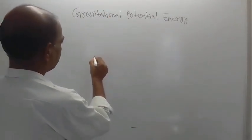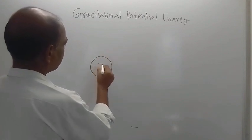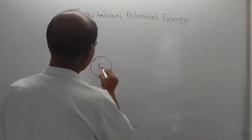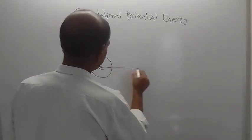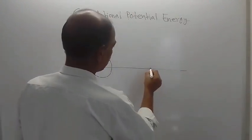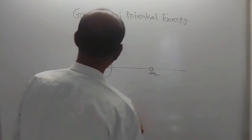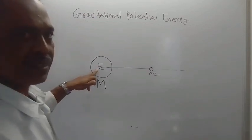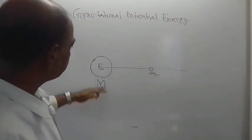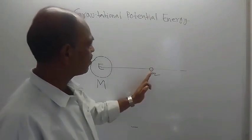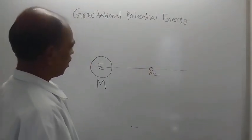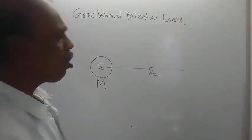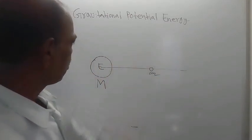This is Earth — E stands for Earth. This is the center of the Earth. Take one straight line here. There is one small mass, M. The mass of this Earth is capital M, and M is the small object. It is located somewhere at a distance of D from the center of the Earth.